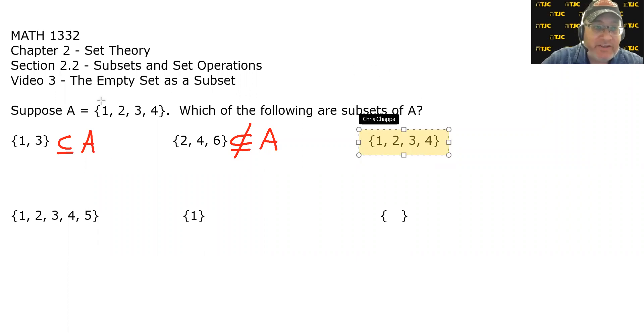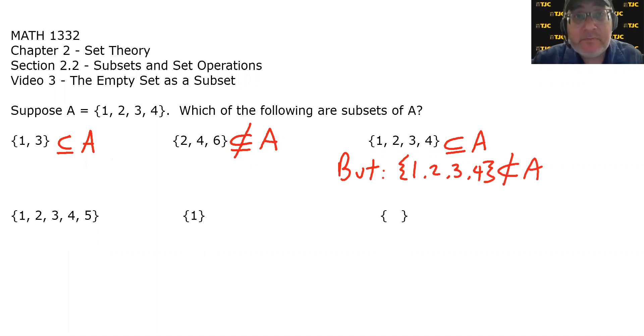Let's take a look at the next one, the set containing one, two, three, and four. Is that a subset of A? Well, it should be pretty obvious that these are the same sets. And we did say in the previous video that every set is a subset of itself. Since every element of the set is inside of A, that means that it is a subset. But it's also worth noting that it's not a proper subset. Because to be a proper subset, you must be a subset and not equal. This one is not a proper subset because it is equal.